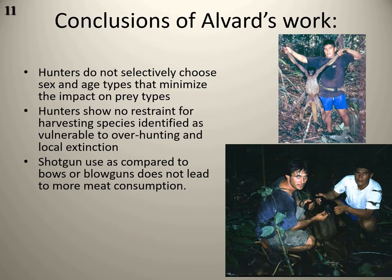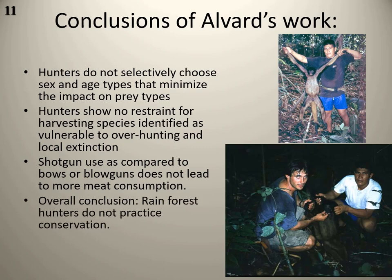Hypothetically, the more efficient technology — shotguns — could allow killing more animals, but it didn't have that effect. It didn't cause them to kill more and consume more meat, even though they technically could have because of the technological advantage. The overall conclusion of Alvard's work is that rainforest hunters, the Piro, do not practice intentional conservation. That doesn't mean their practices and beliefs are not overall sustainable — it just means they don't set out the same way as Western conservationists to establish a national park.